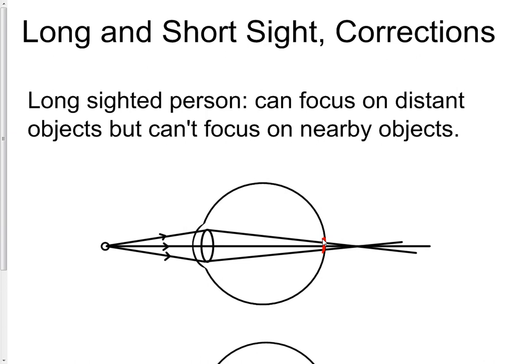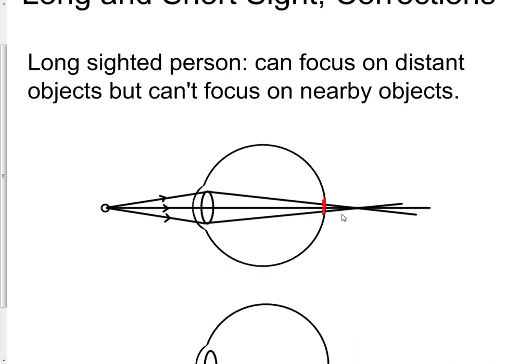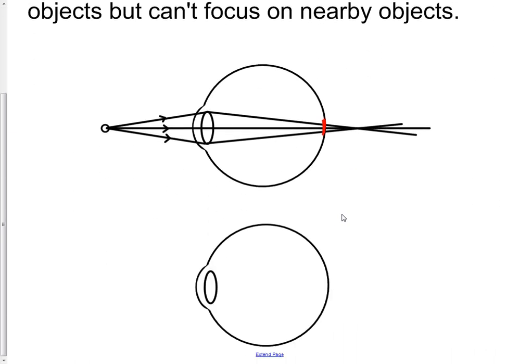A long-sighted person is going to see blurry images when looking at something nearby. To correct this, we use a converging lens — it does a bit more focusing of the light, helping to converge those rays a bit more.